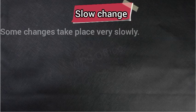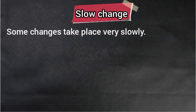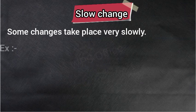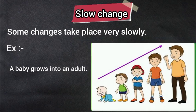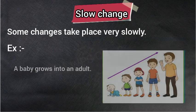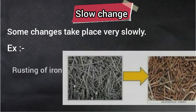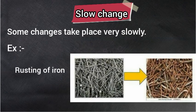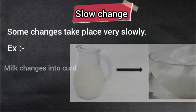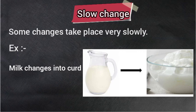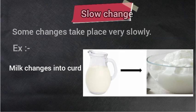And the next — slow change, यानि मंद परिवर्तन. Some changes take place very slowly — कुछ परिवर्तन बहुत धीरे-धीरे होते हैं. For example: a baby grows into an adult — एक बच्चा व्यस्क के रूप में धीरे-धीरे बढ़ता है; rusting of iron — लोहे में जंग लगने की प्रक्रिया भी काफी slow होती है; milk changes into curd — दूध का दही में परिवर्तन.